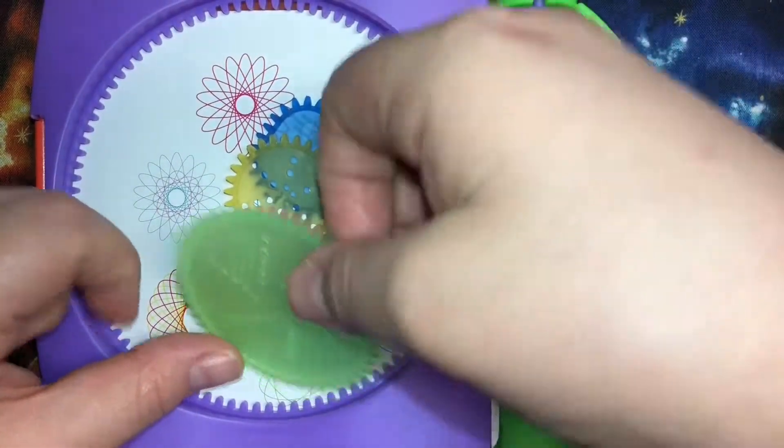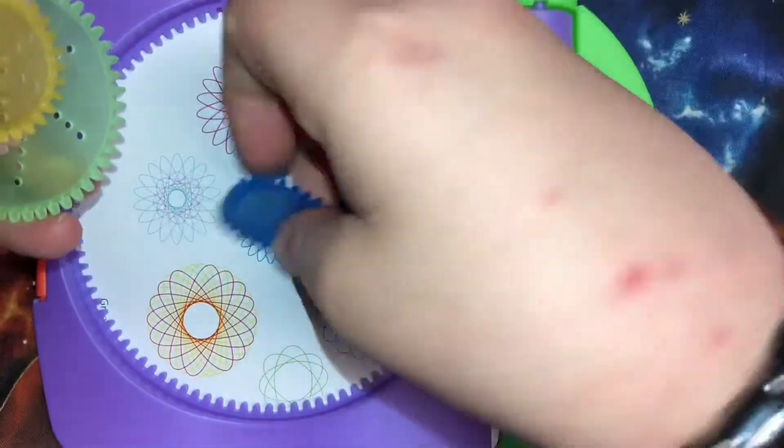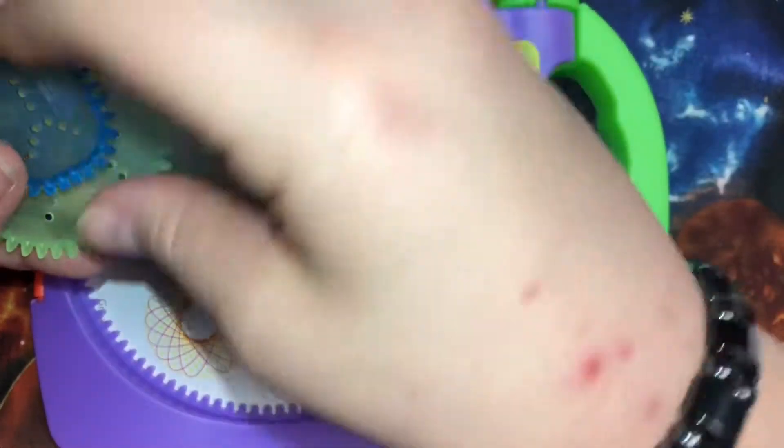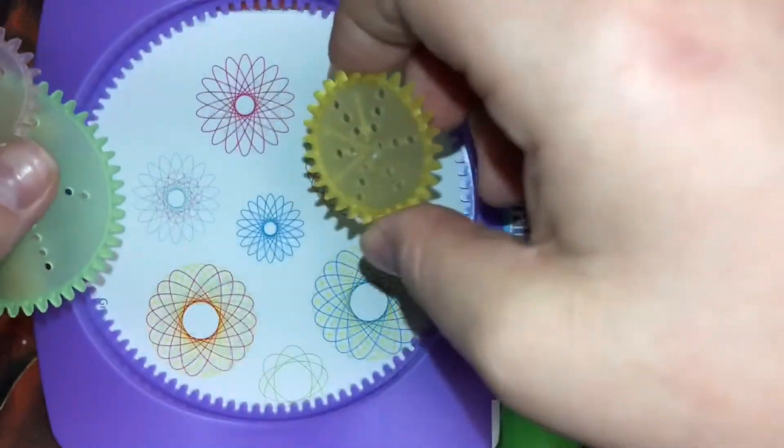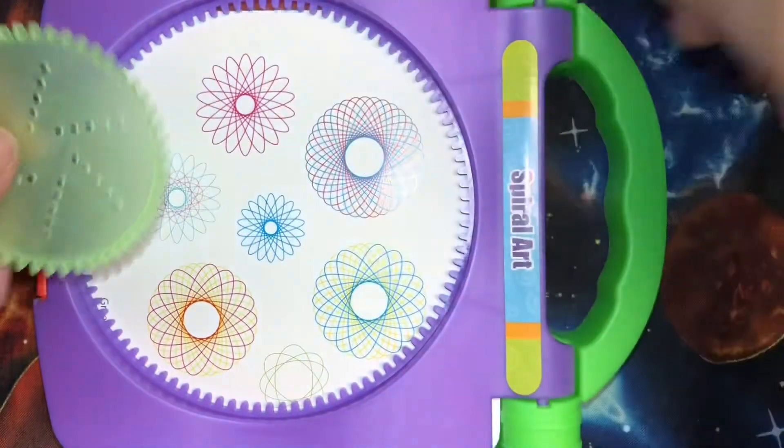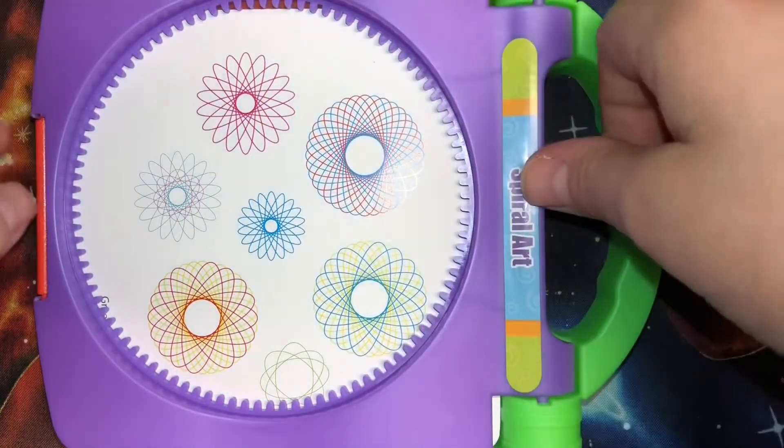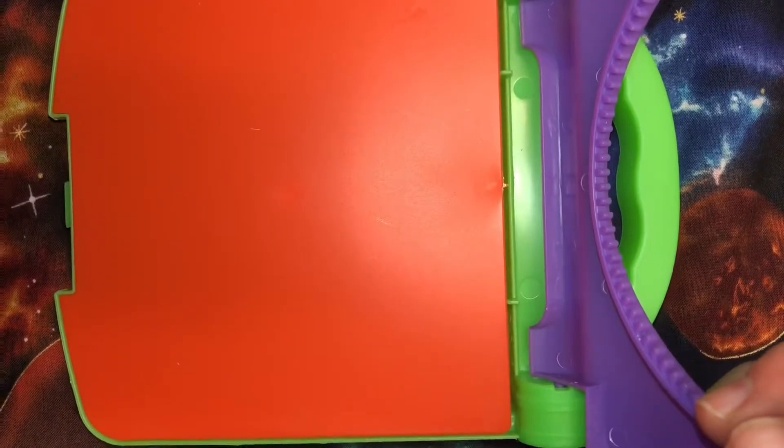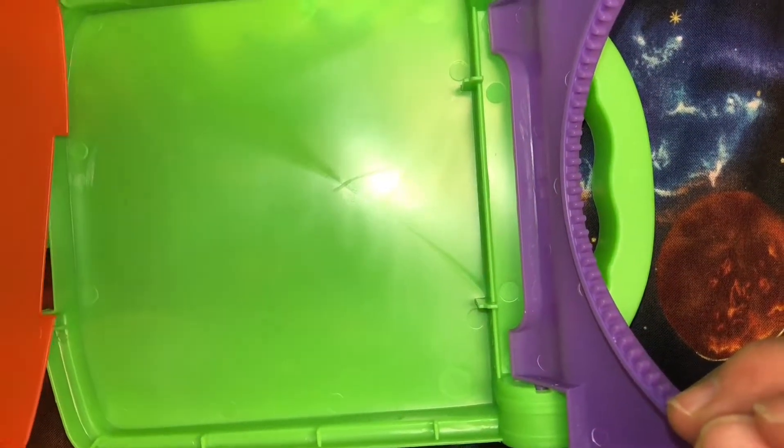As you can see, this kit comes with one, two, three, four different shapes to draw with, each one having a few holes for your pen to go through. This is a demonstration of what the circles will look like. It opens up to reveal a flat board which you can take out and store your Spirographs in underneath.